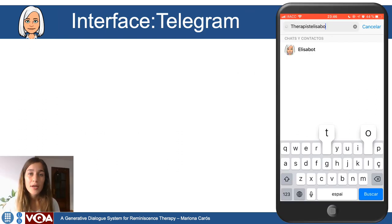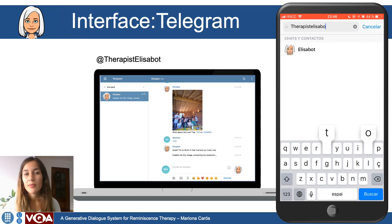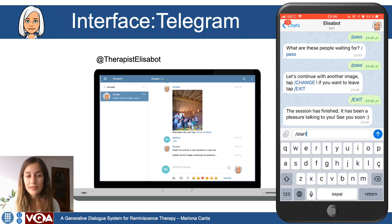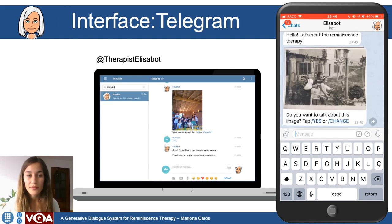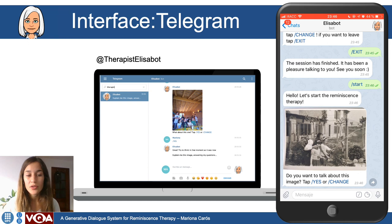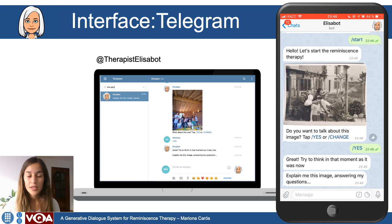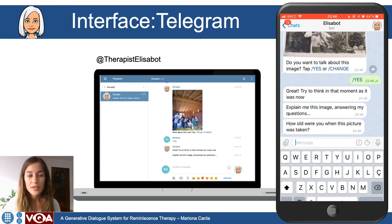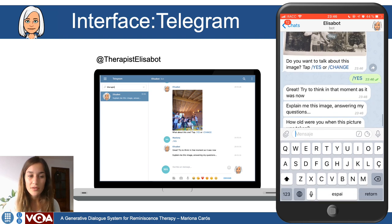We use Telegram as the interface for Elizabeth, which is a messaging application like WhatsApp. Users can start a conversation by typing therapist Elizabeth and then the command start. Elizabeth will ask the user if he or she wants to talk about the first picture. The user taps yes and the therapy starts. Elizabeth says: great, try to think in that moment as it was now. Explain me this image answering my questions. How old were you when this picture was taken?